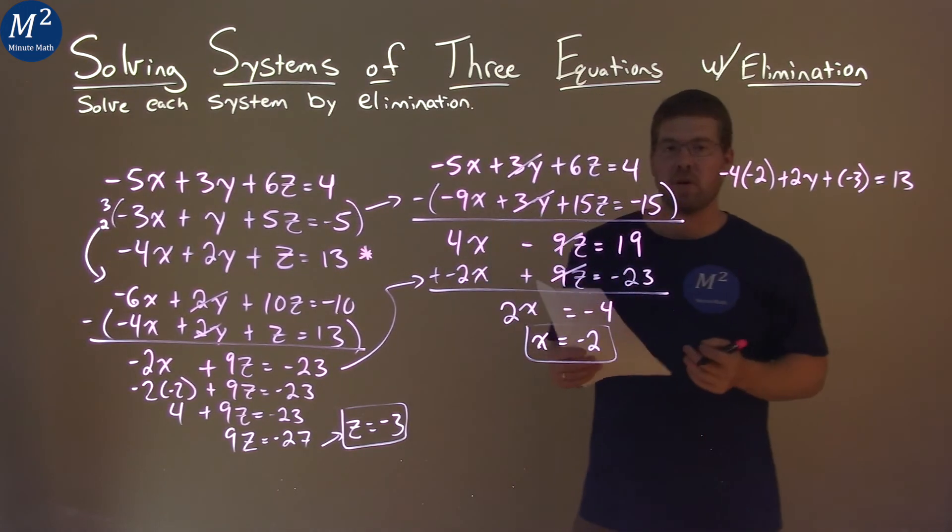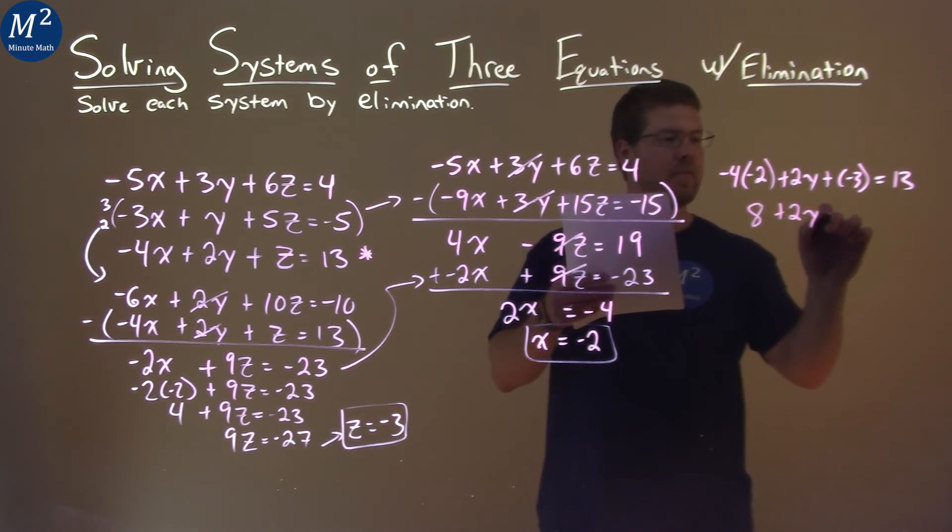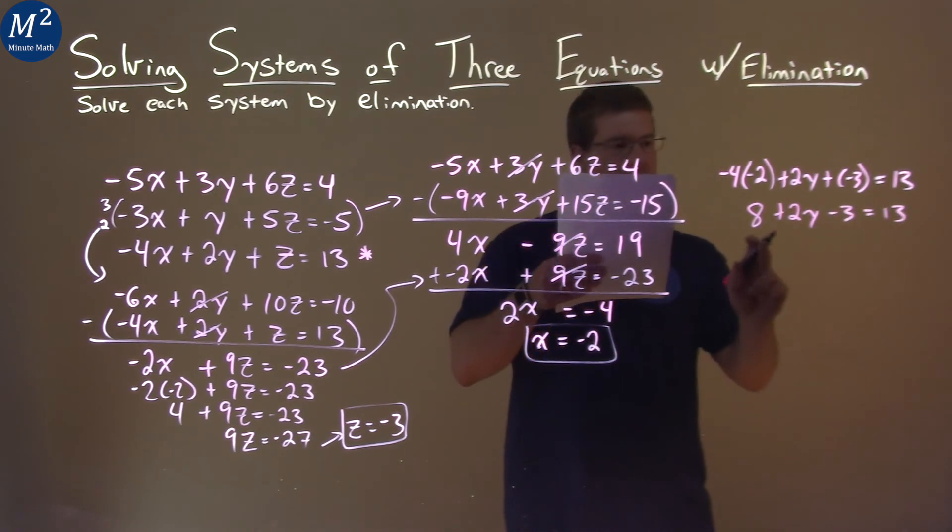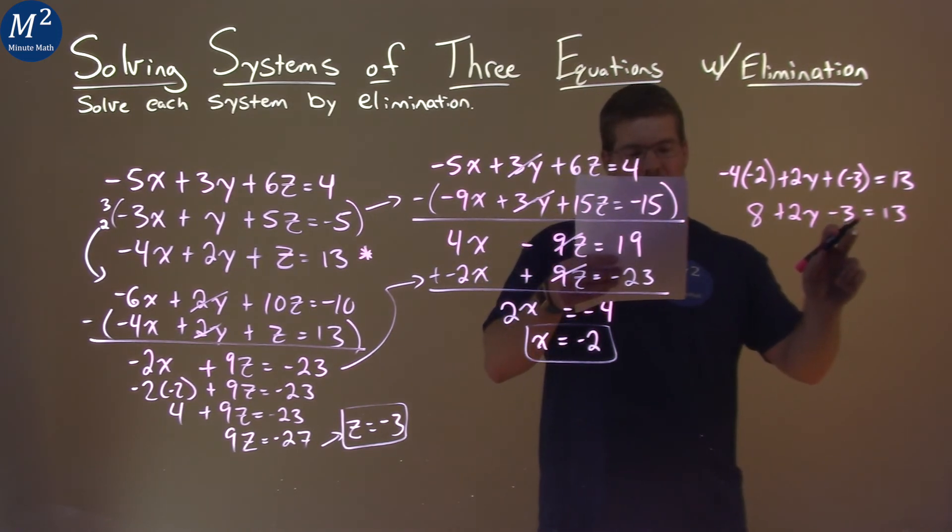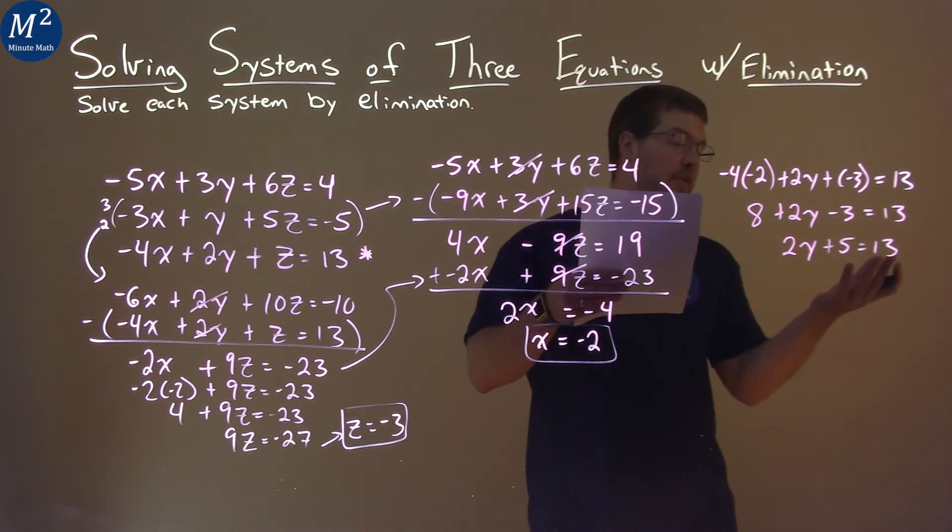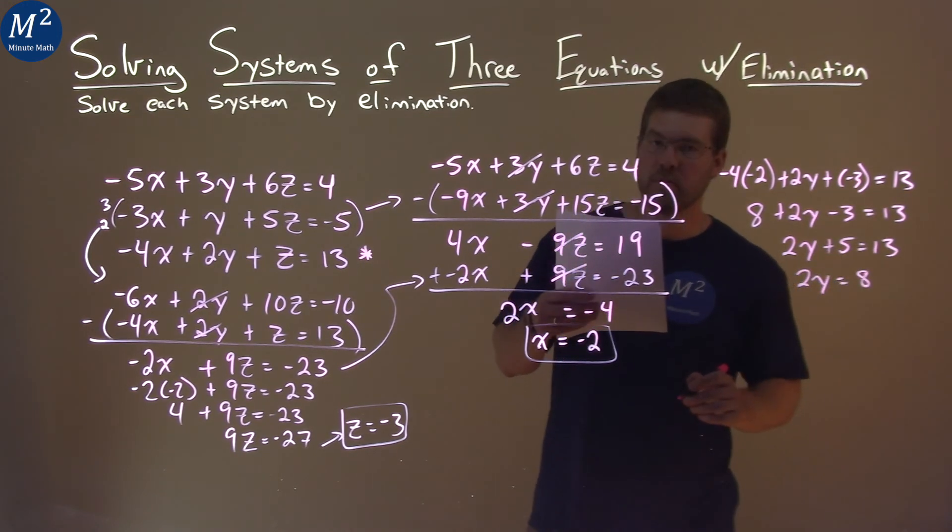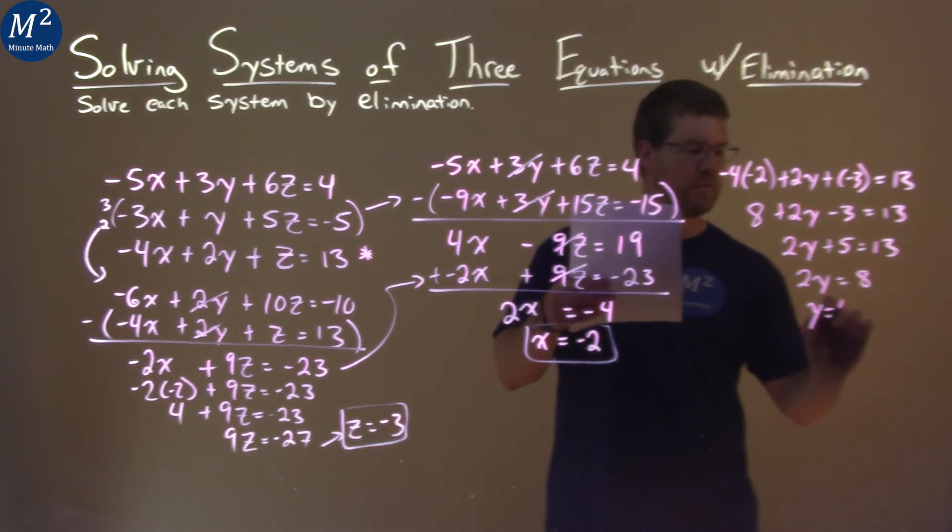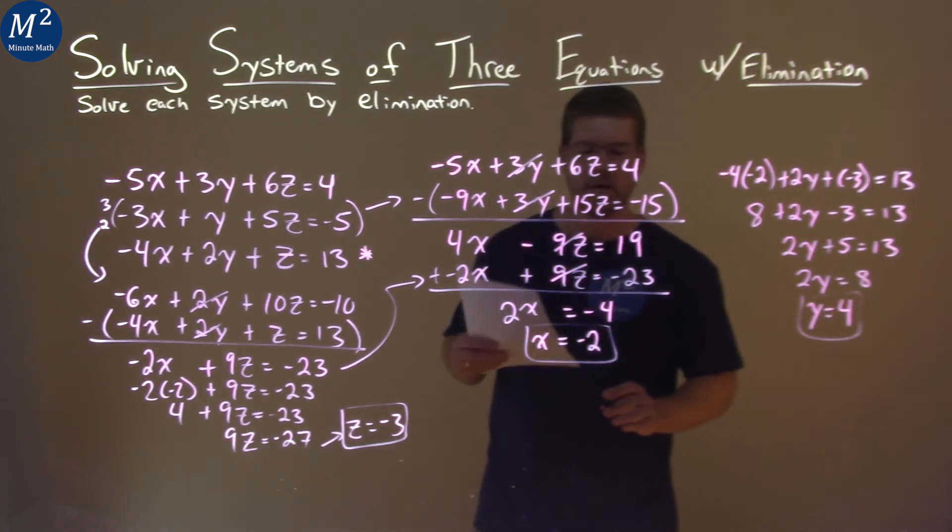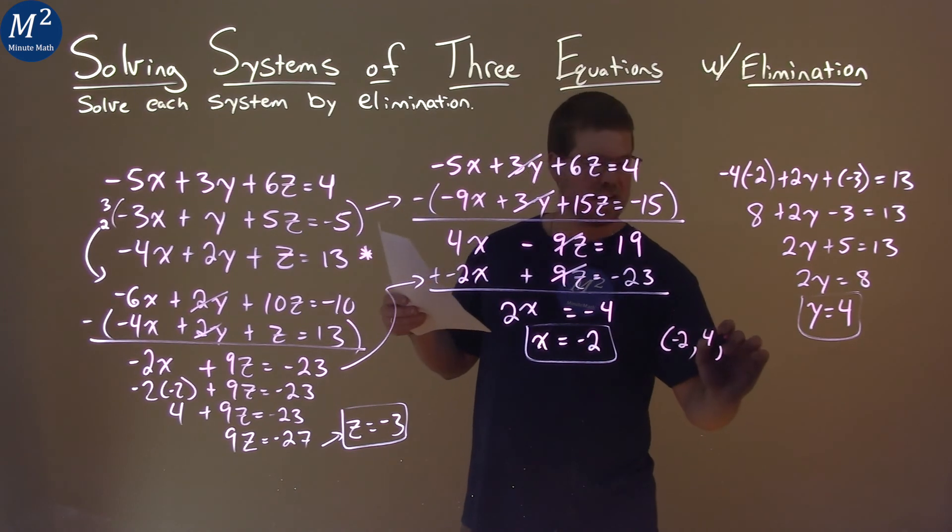Now we have an equation with one variable. Let's solve for y. Negative 4 times negative 2 is a positive 8. 2y comes down, and we have minus 3 equals 13. 8 minus 3 is 5, so we have 2y plus 5 equals 13. Subtract 5 from both sides. 2y equals 13 minus 5, which is 8. Divide both sides by 2. And y equals 8 divided by 2, which is 4. So we have our three values we can write as a coordinate point now. That's negative 2 for the x, y is 4, and z is negative 3.